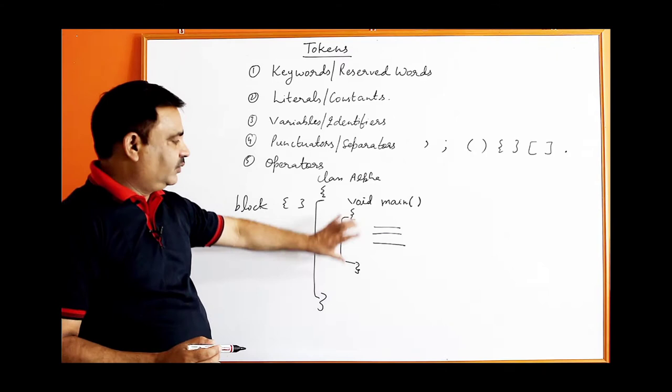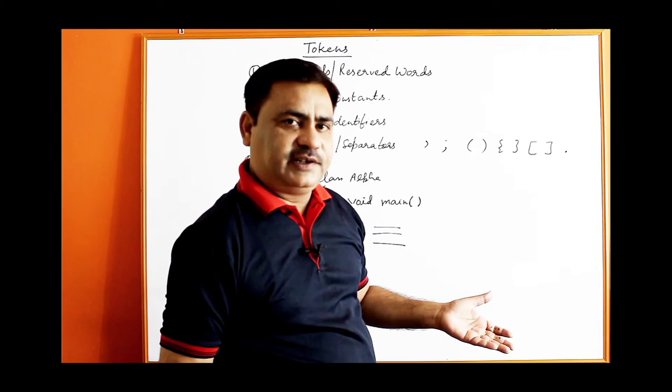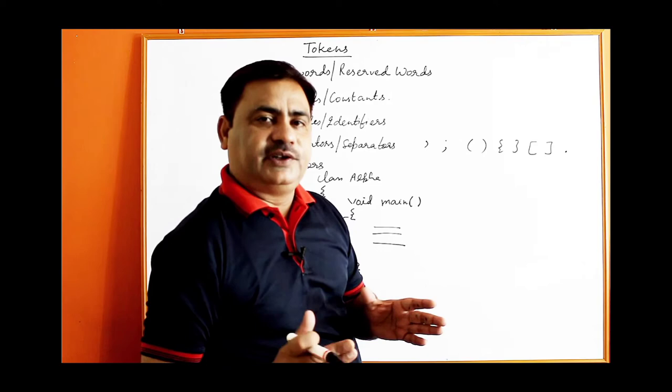The square bracket separator is used in arrays, which we will discuss in later topics. The dot separator is used to separate a class name and a function name — for example, Math.functionName or object.functionName. We will discuss those in later classes. That covers separators or punctuators.